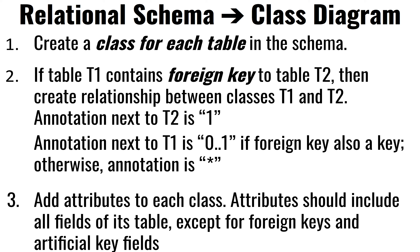The annotations depend on which side you're on. On the strong side — where you have the primary key — that becomes a one. On the other side, it depends: if the foreign key is also a primary key, then it can be at most a one, because it could be a one-to-one or optional relationship if it's null. If it's only a foreign key and not also a primary key, then it's just a star.